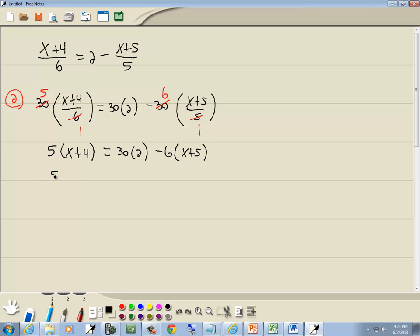Well, 5 times x is 5x, 5 times 4 is 20. 30 times 2 is 60. Negative 6 times x is negative 6x, negative 6 times 5 is negative 30. Our next step is to combine together like terms, combine together numbers. Over on the right side, we've got 60 minus 30 which gives us 30.